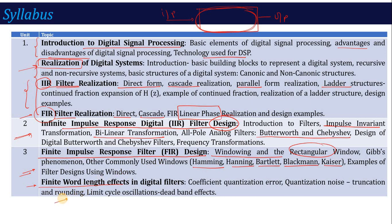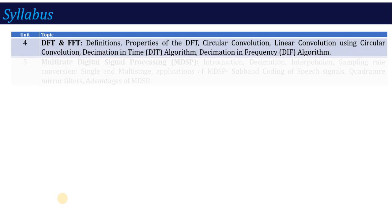Unit 4 introduces a new topic: the DFT (Discrete Fourier Transform). You may have had a brief introduction to DFT in Signals and Systems last semester, but here DFT will be covered in full detail — its definition, calculation, basic formula, and various properties. Just as you studied Z-transform and Laplace transform properties, you will study all DFT properties. The key property covered is how circular convolution and linear convolution are calculated using DFT.